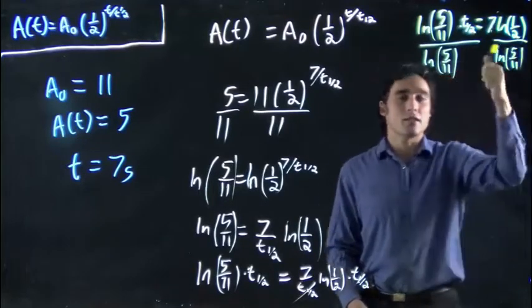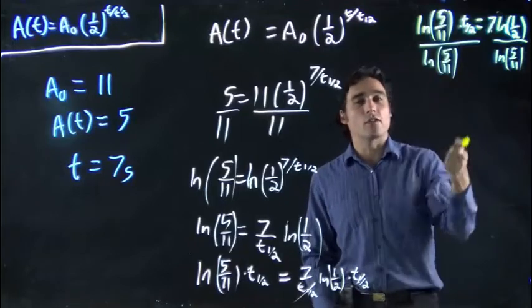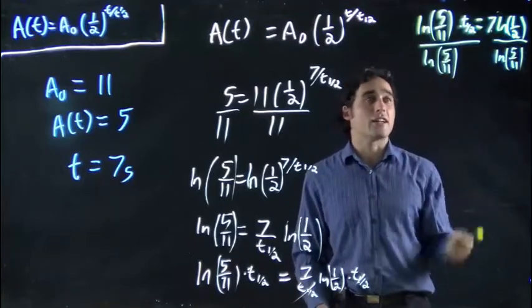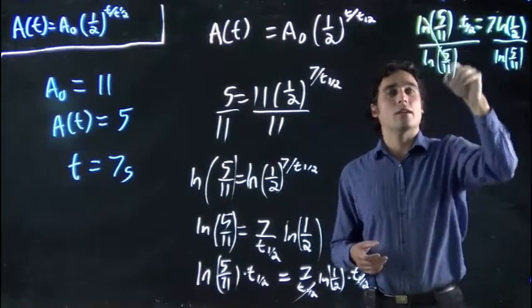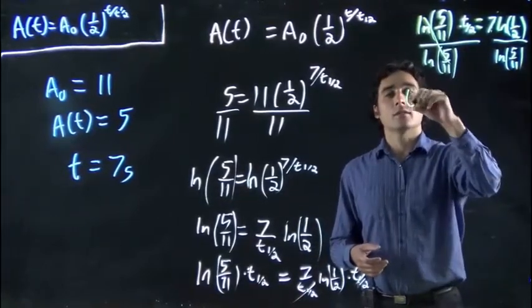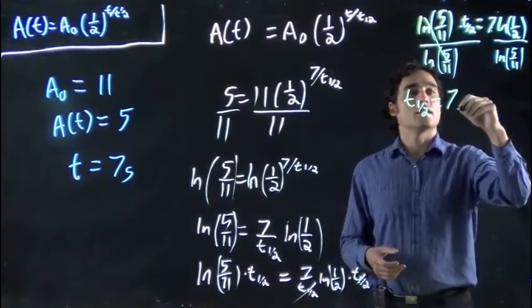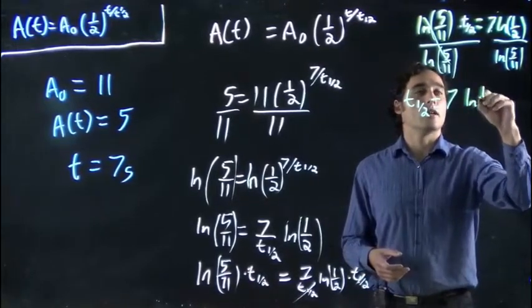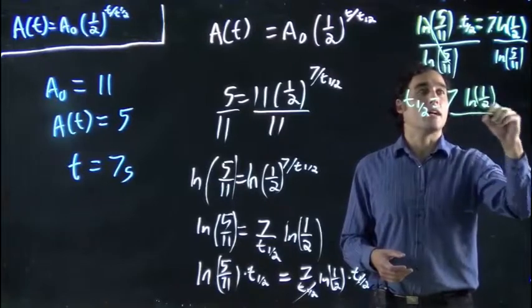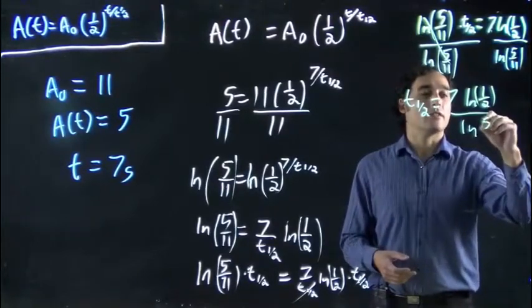Also bear in mind, these are just numbers. We could have punched 5 over 11 and taken the ln of that in our calculator and get our approximate number. We're just leaving it how it is to be exact right now. Because now we have t₁/₂ equals 7 times ln of 1/2, divided by ln of 5/11.